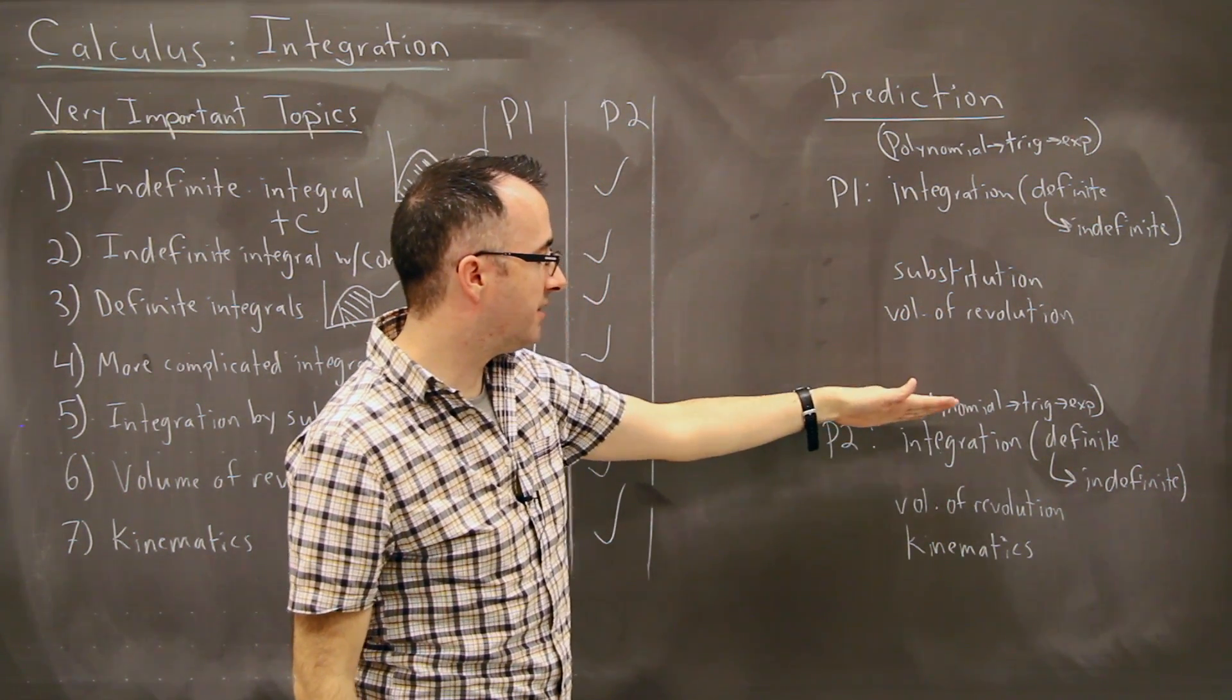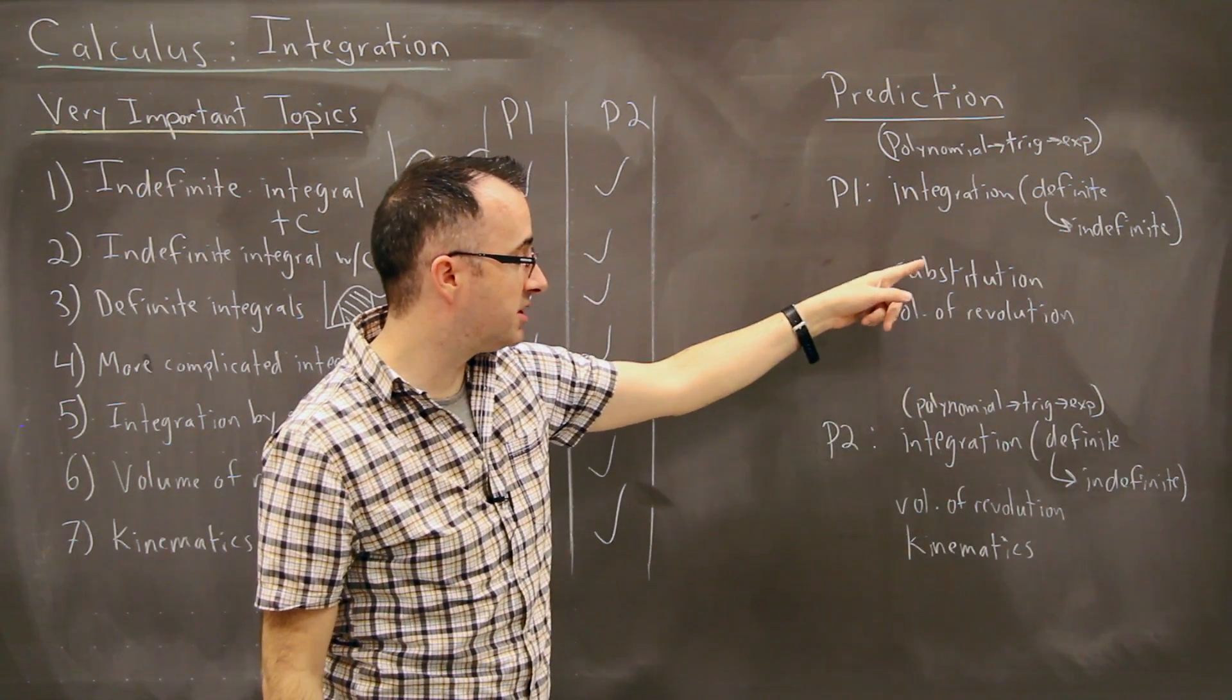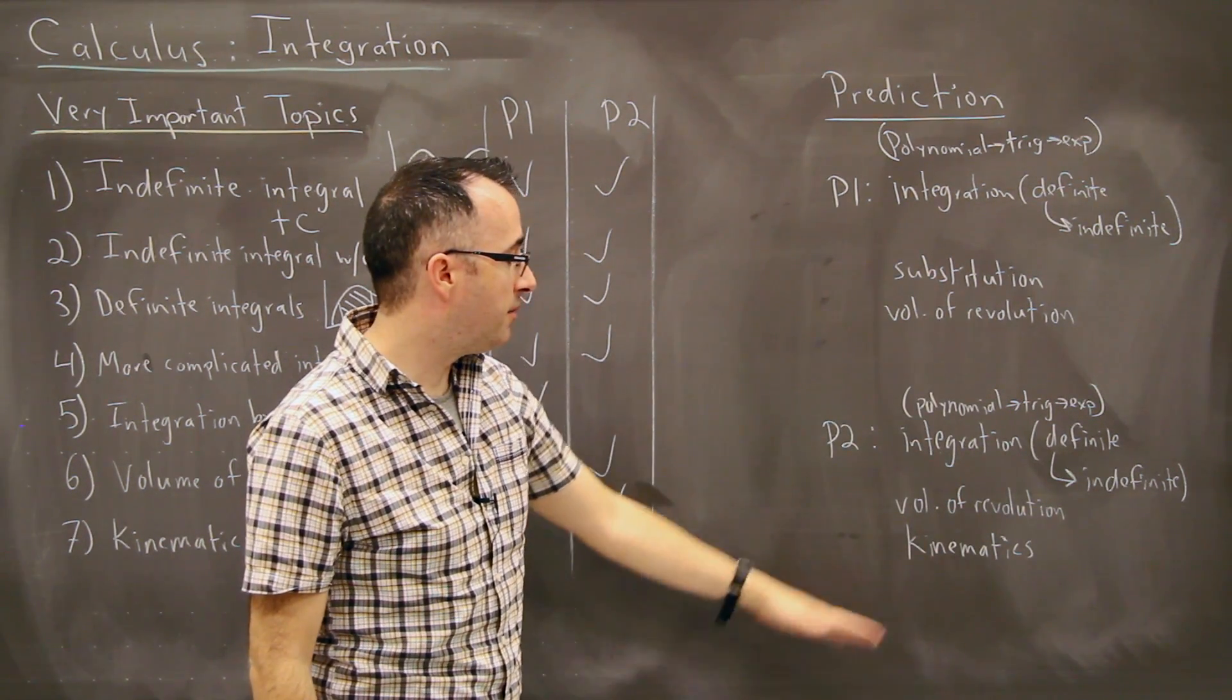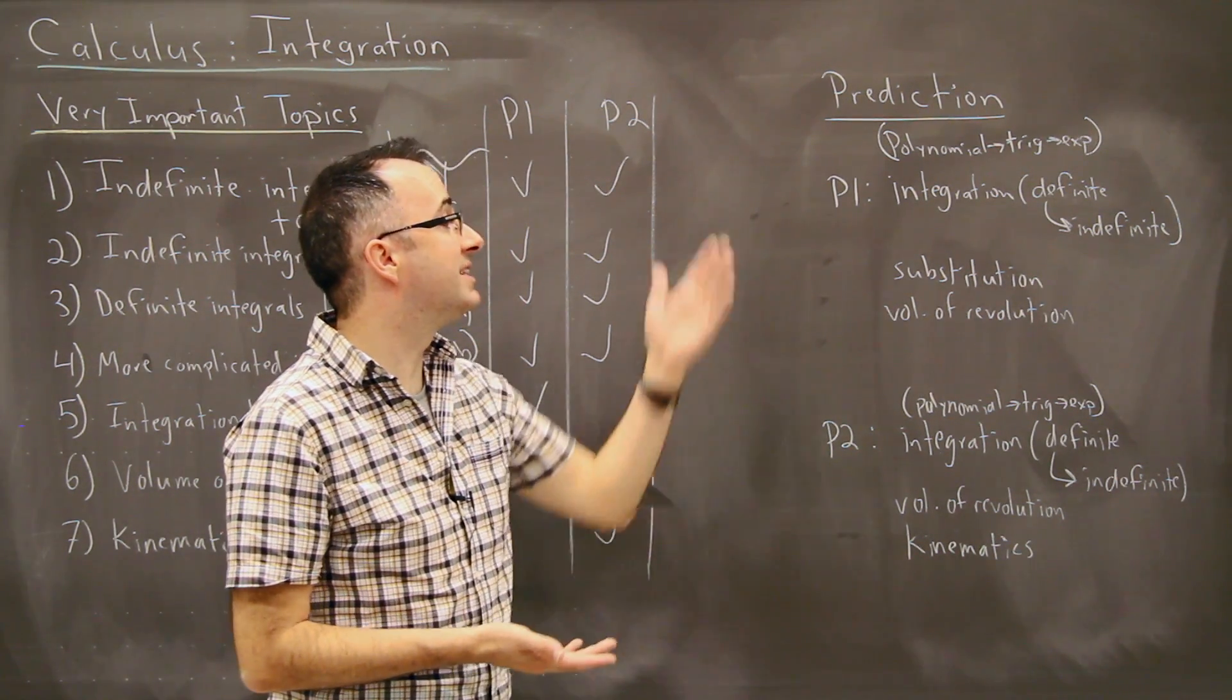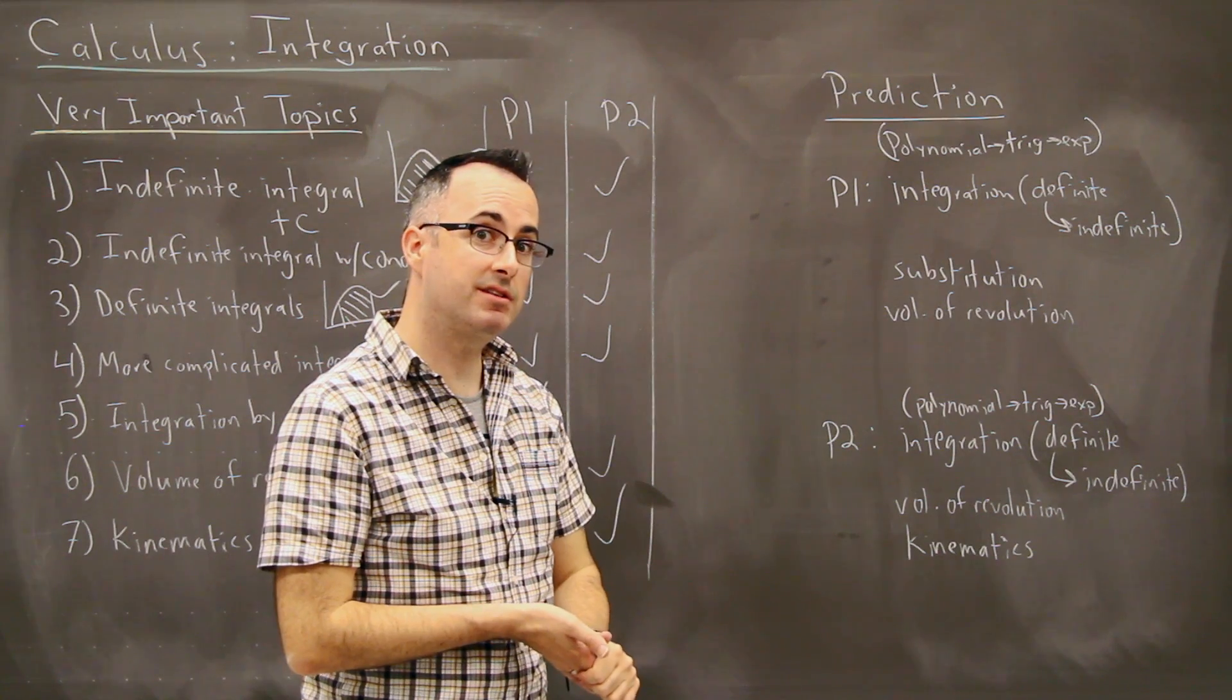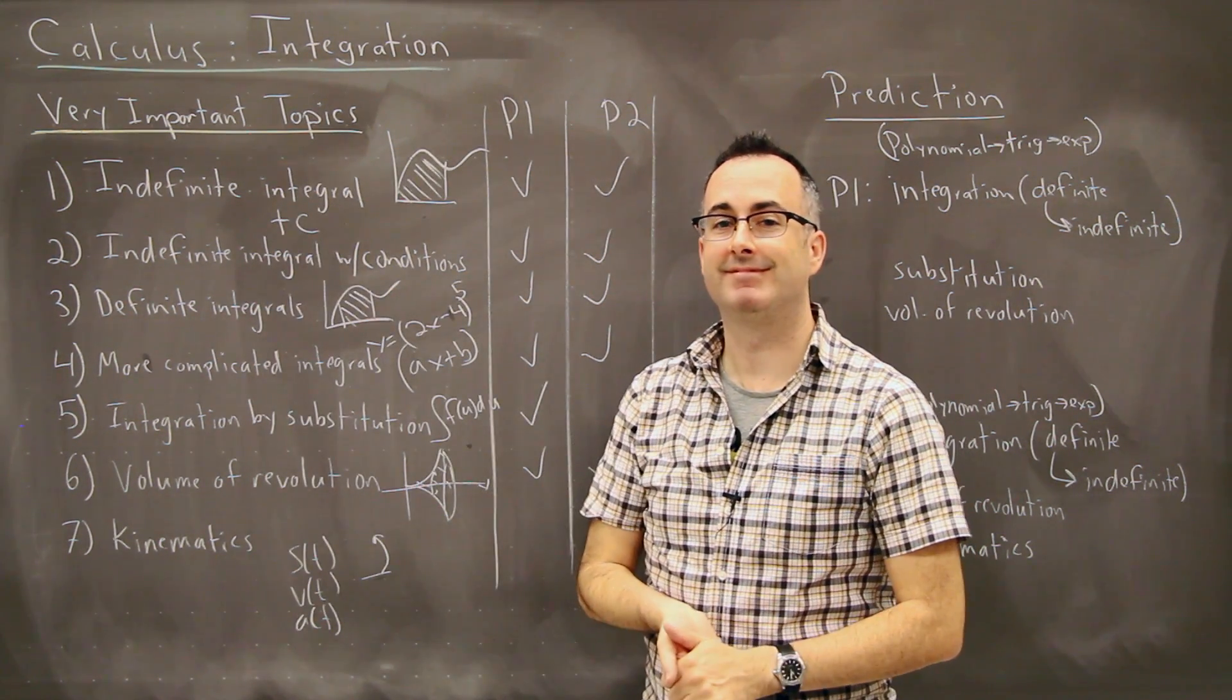Paper two, you still have integration, you still have the volume of revolution, that shows up second. There's not so much substitution on paper two, but you have kinematics shows up very often on paper two. So this gives you a really good idea what's likely to show up as far as the questions. And this right here is all the very important topics, what we're going to cover. Shall we get started?